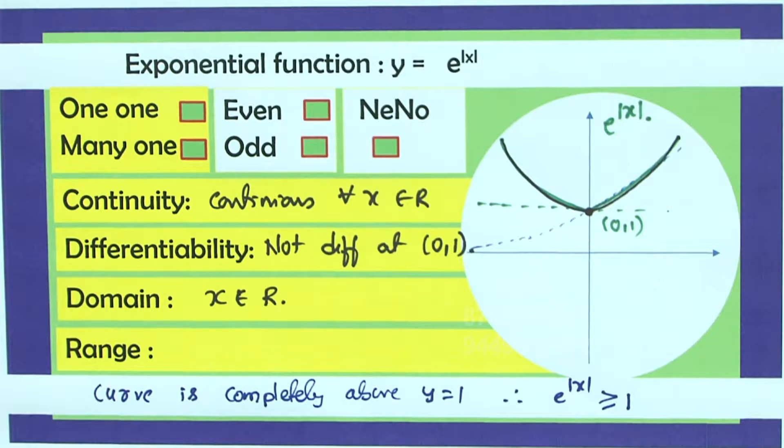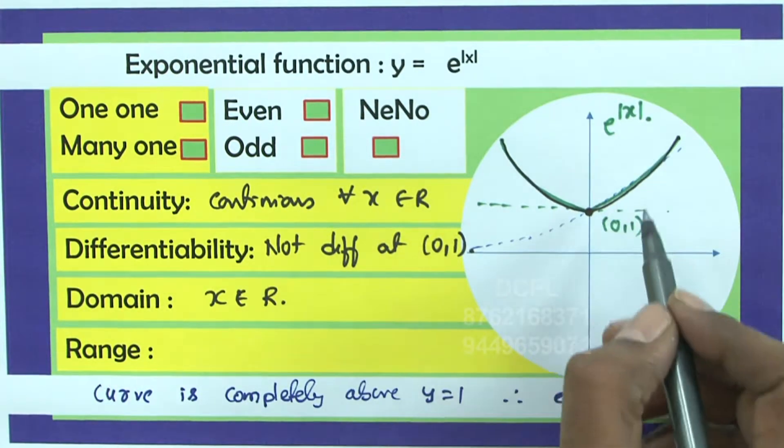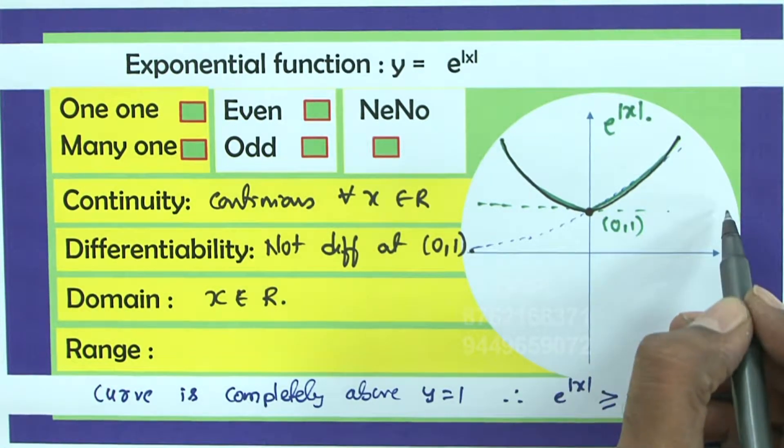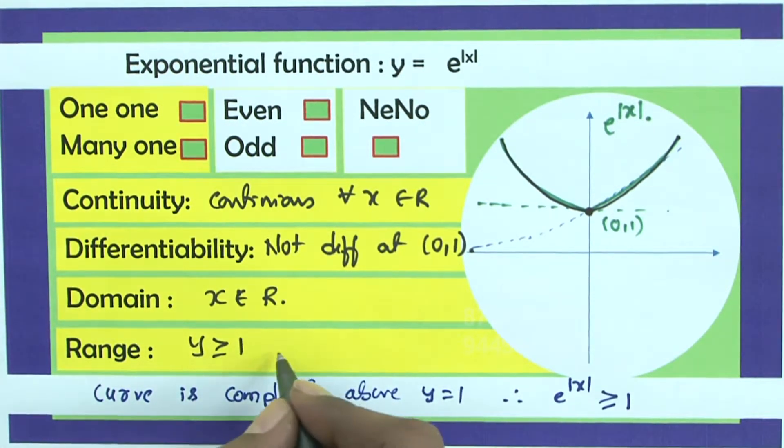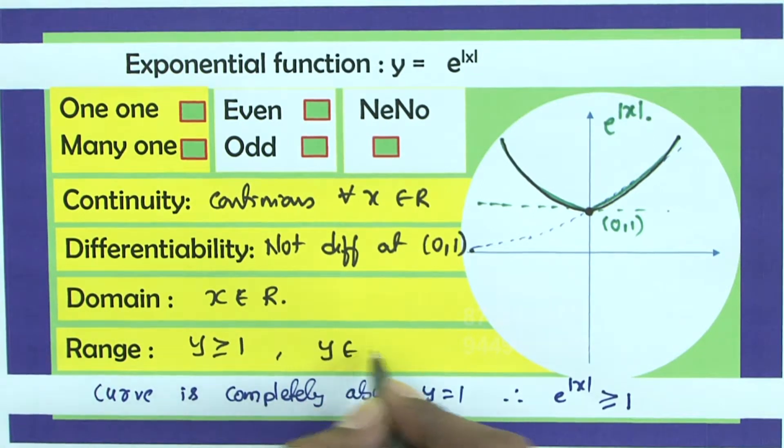Domain means x belongs to set of real numbers. What about range? e power mod x is greater than or equal to 1 always. Is that correct? Therefore, y is greater than or equal to 1. Or you can also write it as y belongs to 1 to infinity including 1 excluding infinity.